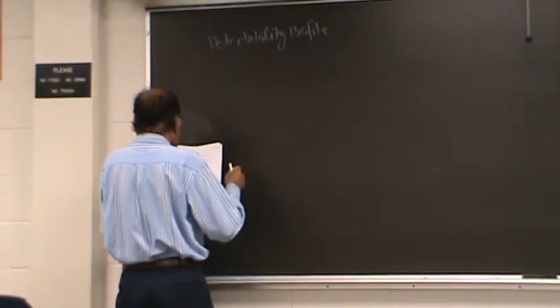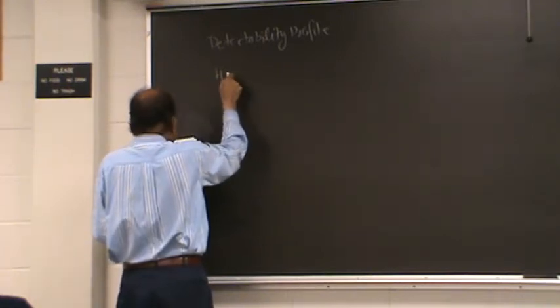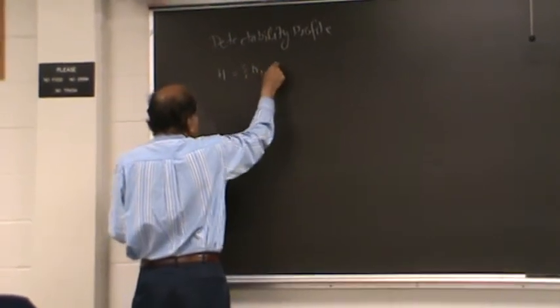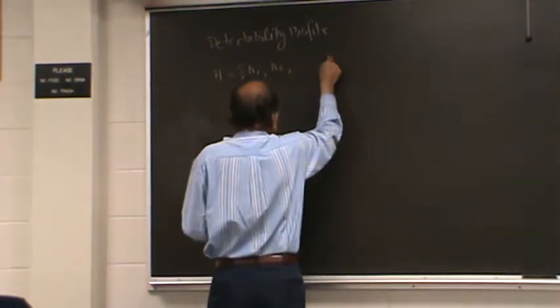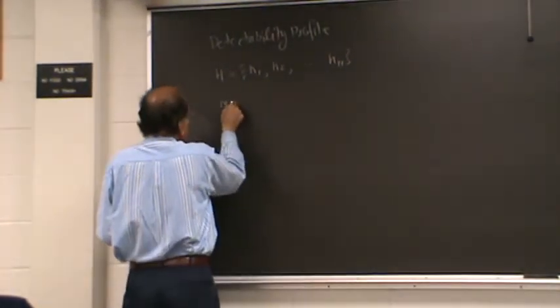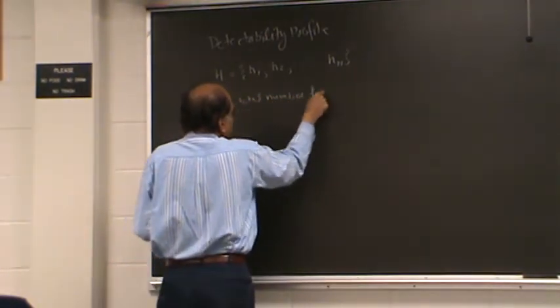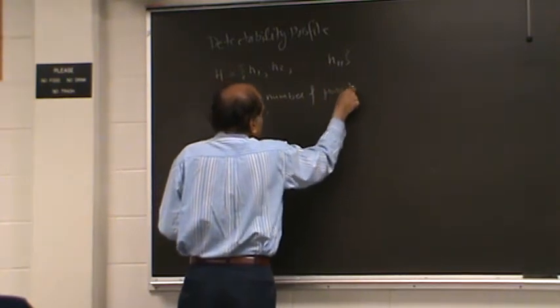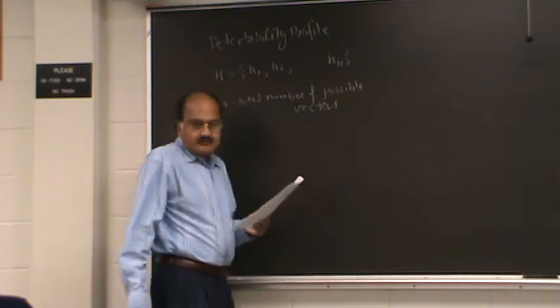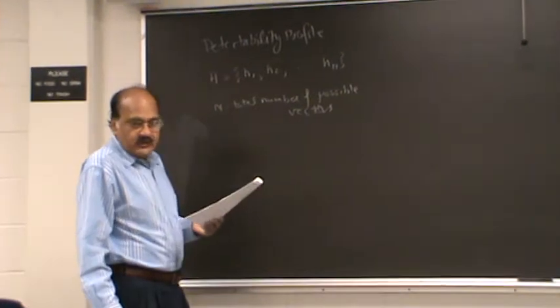And so this is the detectability profile. So a detectability profile is the partition of all the potential faults. So here, N is the total number of possible vectors. If you have a combinational circuit with, let us say, five inputs, N is equal to 2 raised to 5.